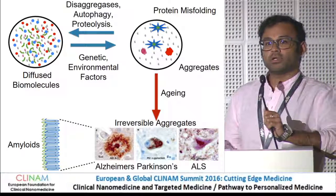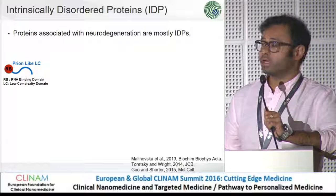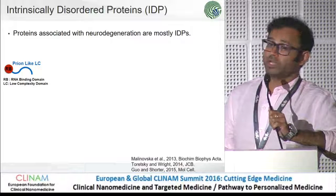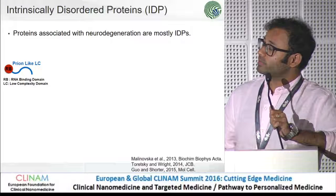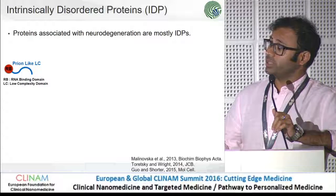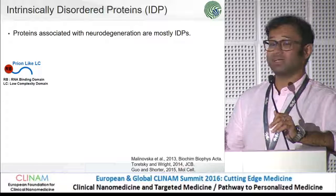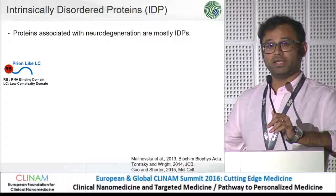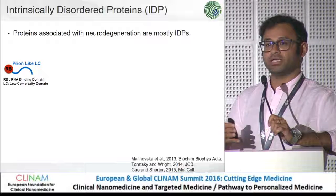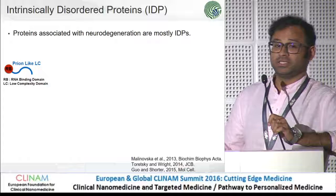Let's now take a closer look at the proteins that tend to aggregate in these diseases. All of these proteins fall into the class known as intrinsically disordered proteins. Most proteins normally fold into a very nice three-dimensional shape, but these proteins have a domain with a very low-complexity amino acid composition that doesn't allow the protein to fold into a three-dimensional shape, making it an unstructured, low-complexity, prion-like domain.